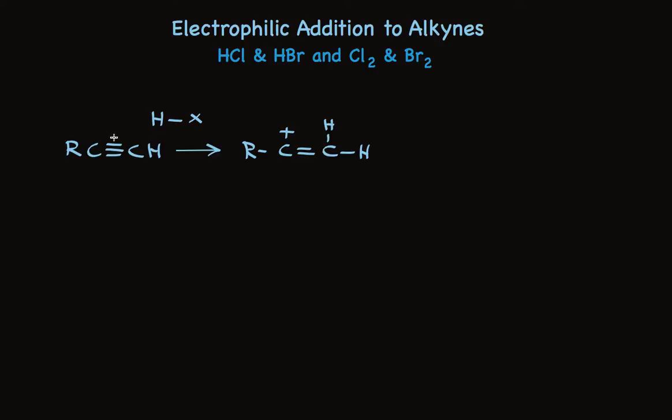A pair of pi electrons are used to form a sigma bond with hydrogen that makes an intermediate carbocation, and in the second step a nucleophile adds. The nucleophile is halide that was formed in the first step when the proton was lost from a halogen atom.